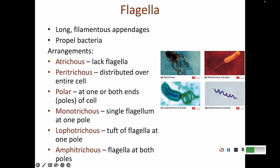Polar means the flagella are at one or both ends — the poles of a cell. A monotrichous bacterium has one flagellum, 'mono' meaning one, and that flagellum is almost always at its pole. So a monotrichous bacterium is also polar because its single flagellum is at the pole.